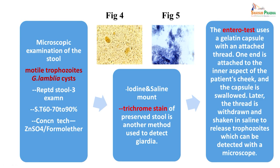For diagnosis, one needs to demonstrate motile trophozoites or cysts in the stool. Microscopic examination of stool is the primary method, and repeated stool examinations should be done — at least three stool samples should be taken. Sensitivity of stool examination ranges from 60 to 90 percent. The stool sample should be concentrated using zinc sulfate or formal-ether concentration, after which iodine-saline mounts or trichrome stains of preserved stool can be prepared. In iodine stain, cysts appear yellow-stained, while trophozoites can be seen with other stains.